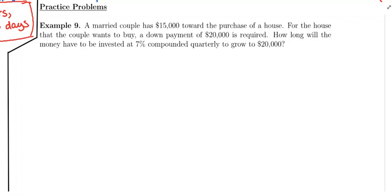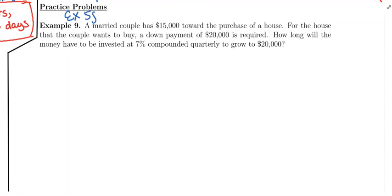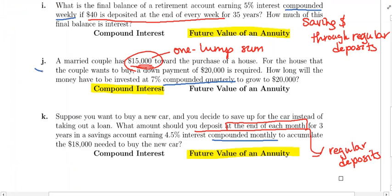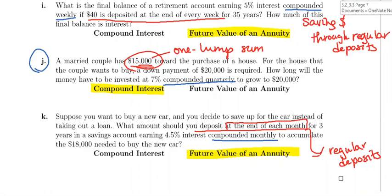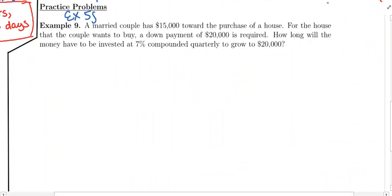We saw this example in example five — this was example five J. So if we flip back to that, there's the problem. Let's go back and notice we labeled this as compound interest. Let's go back and discuss why really quickly before we set it up and solve.